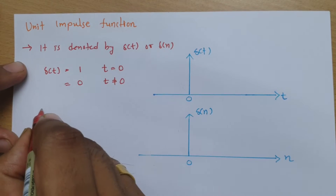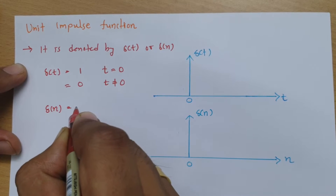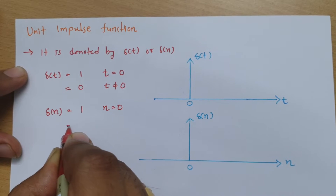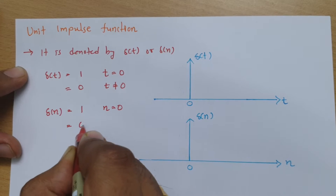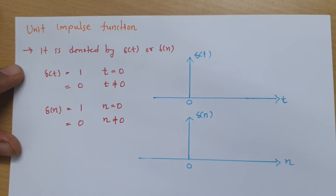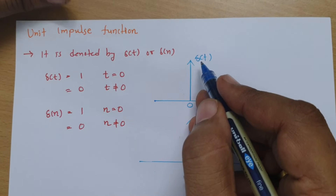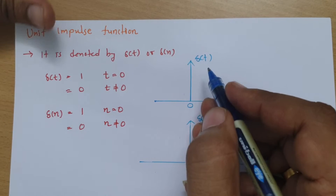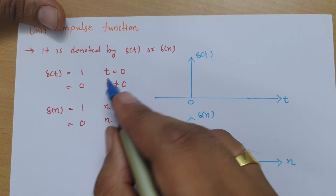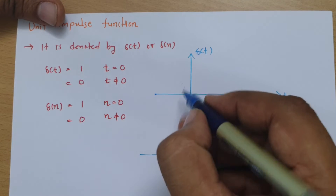In discrete time, δ(n) equals 1 for n = 0 and equals 0 for n ≠ 0. If you want to see how it looks graphically, δ(t) equals 1 at t = 0 and 0 at t ≠ 0.